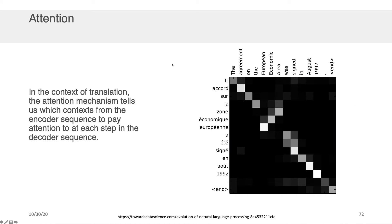Now in the context of translation, which is something we've spoken about a little bit in this lecture, the attention mechanism actually tells us which contexts from the encoder sequence to pay attention to at which step in the decoder sequence. So we spoke about English to French translation. Here's an example of a sentence, the agreement on the European economic area was signed in August 1992, and we wanted to translate that to its French equivalent, which I've shown here on the y-axis of this matrix.